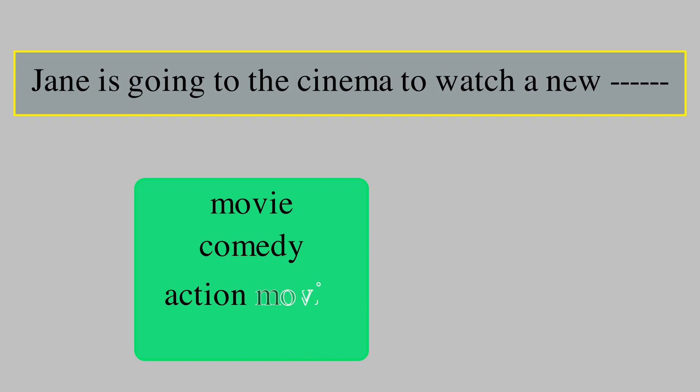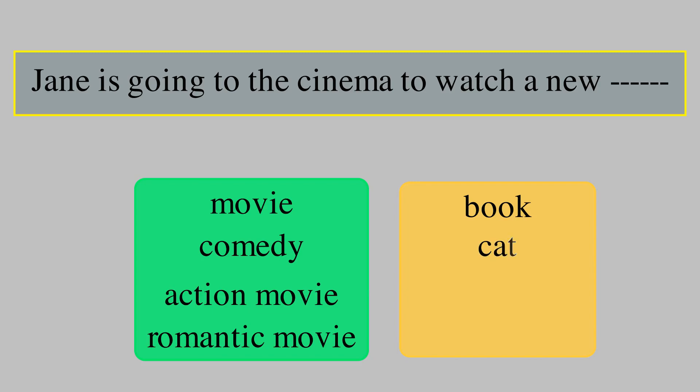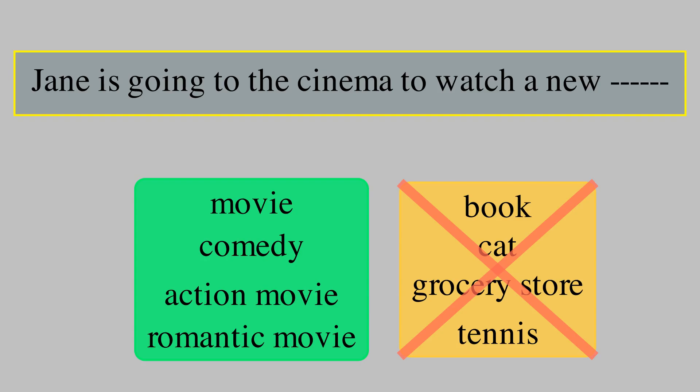Let's start with a motivating example. We have a sentence: 'Jane is going to the cinema to watch a new and...' followed by a blank. What could be placed in that blank space? Some possible answers are 'movie', 'comedy', 'a new action movie', or 'a new romantic movie'. If we had more context — for example, if we knew that Jane loves comedy — then we could easily predict that Jane is going to watch a new comedy. But for sure we cannot say 'book', 'cat', 'grocery store', or 'tennis'.